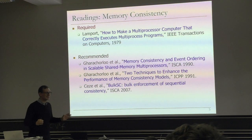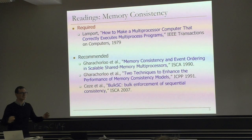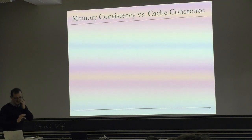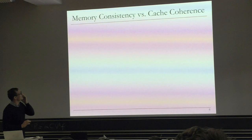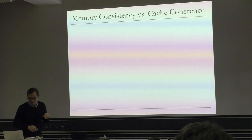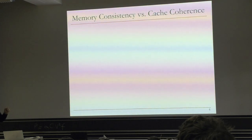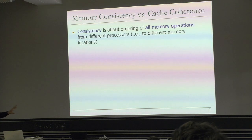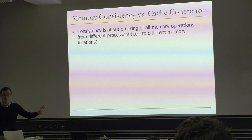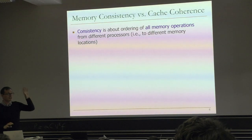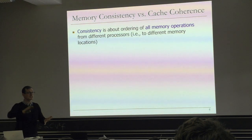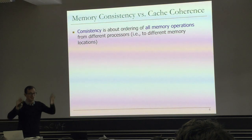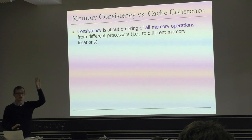This topic is another example of the programmer-microarchitect trade-off. You can make life really hard for the architect and easy for the programmer, or vice versa. The hope is that you find something in between where everybody is reasonably satisfied. People confuse memory consistency and cache coherence a lot — these are completely different things. Consistency is about the ordering of all memory operations from different processors to different memory locations.